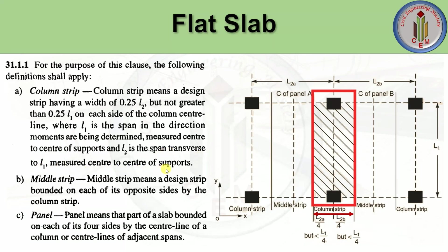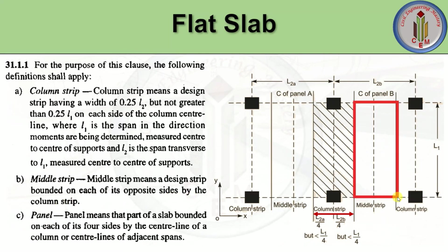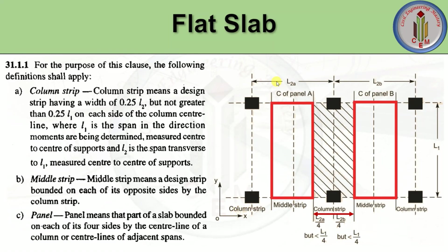The next term is middle strip. Middle strip means a design strip bounded on each of its opposite sides by the column strip. So between the column strips on both sides we have the middle strip. Similarly, if we have one more span, we will have a middle strip in that direction as well.